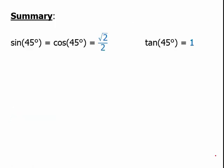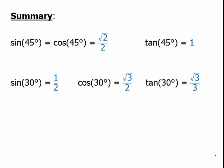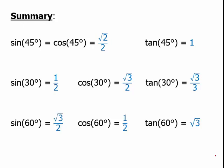In summary, here are the values that are good to know. For the sine of 45 equals the cosine of 45, that's √2 over 2, the tangent is 1. The sine of 30 is 1/2, the cosine of 60 is also 1/2. The cosine of 30 is √3 over 2, so is the sine of 60. The tangent of 30 is √3 over 3, and the tangent of 60 is √3. These are nine very good values to know.